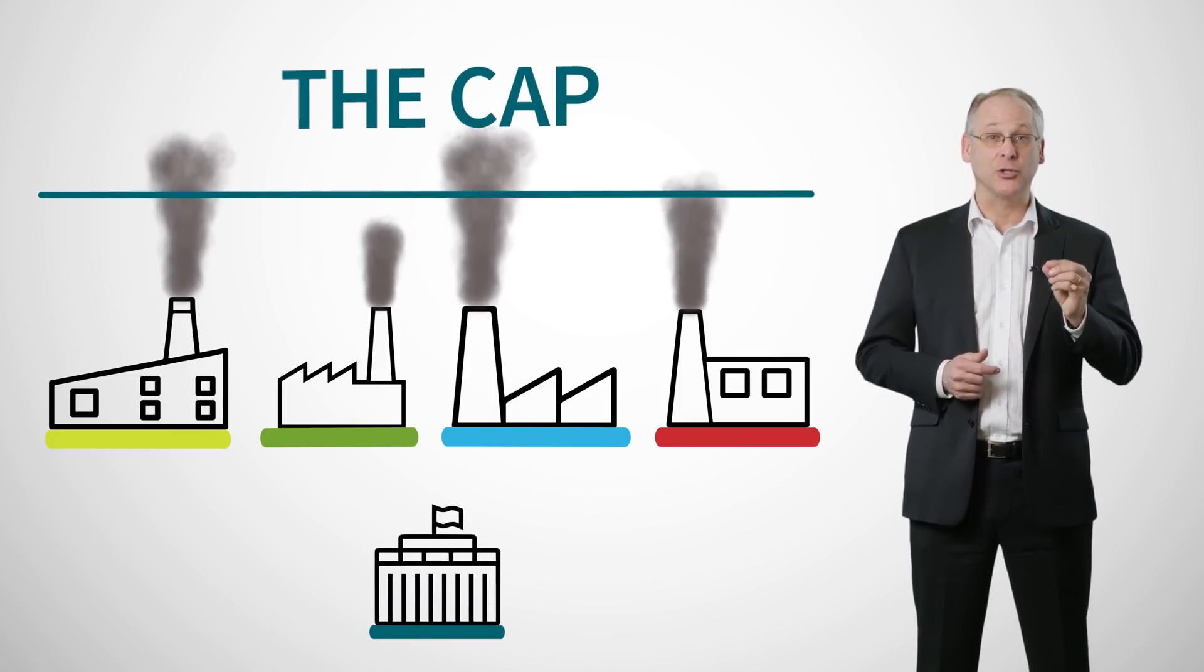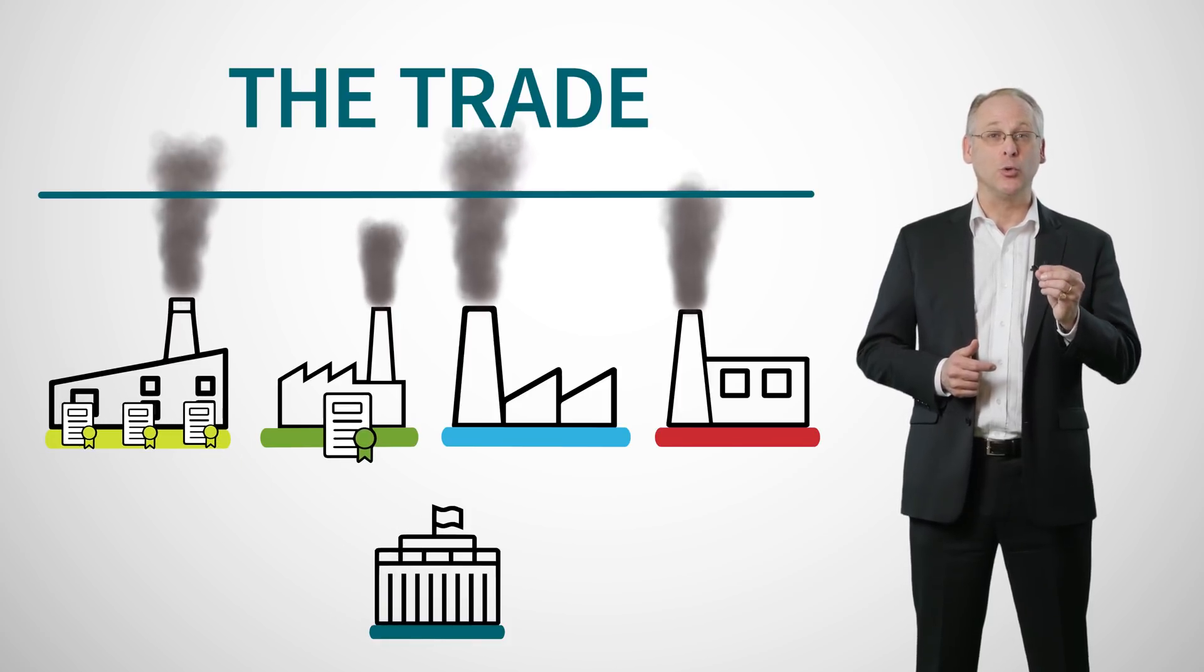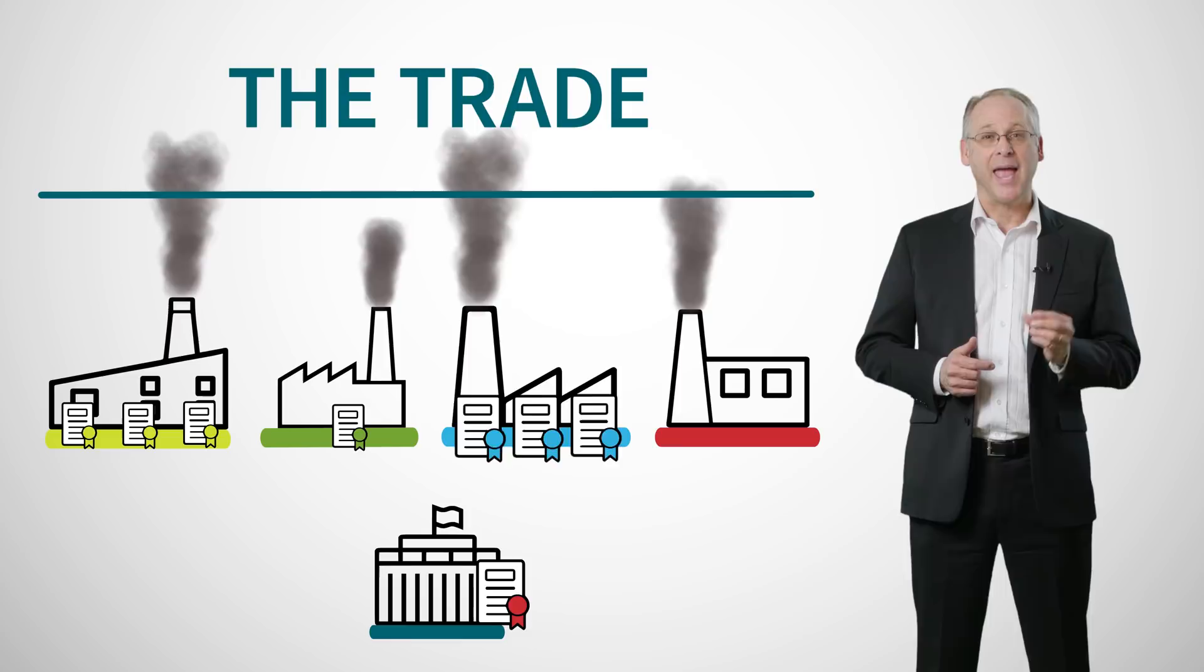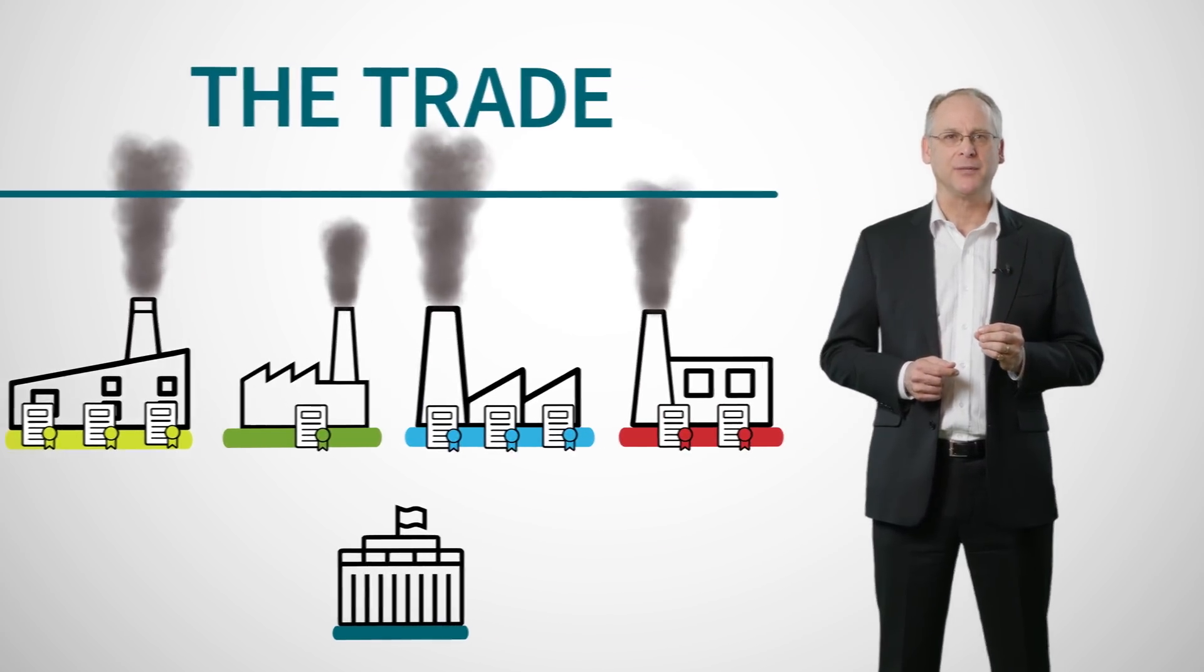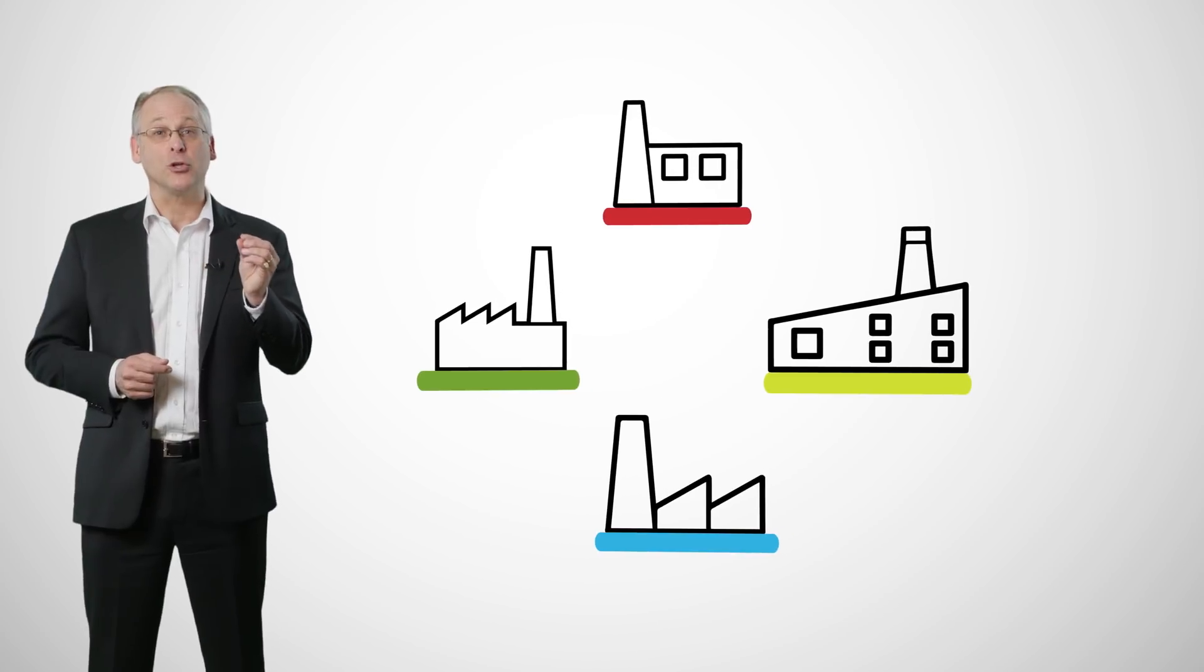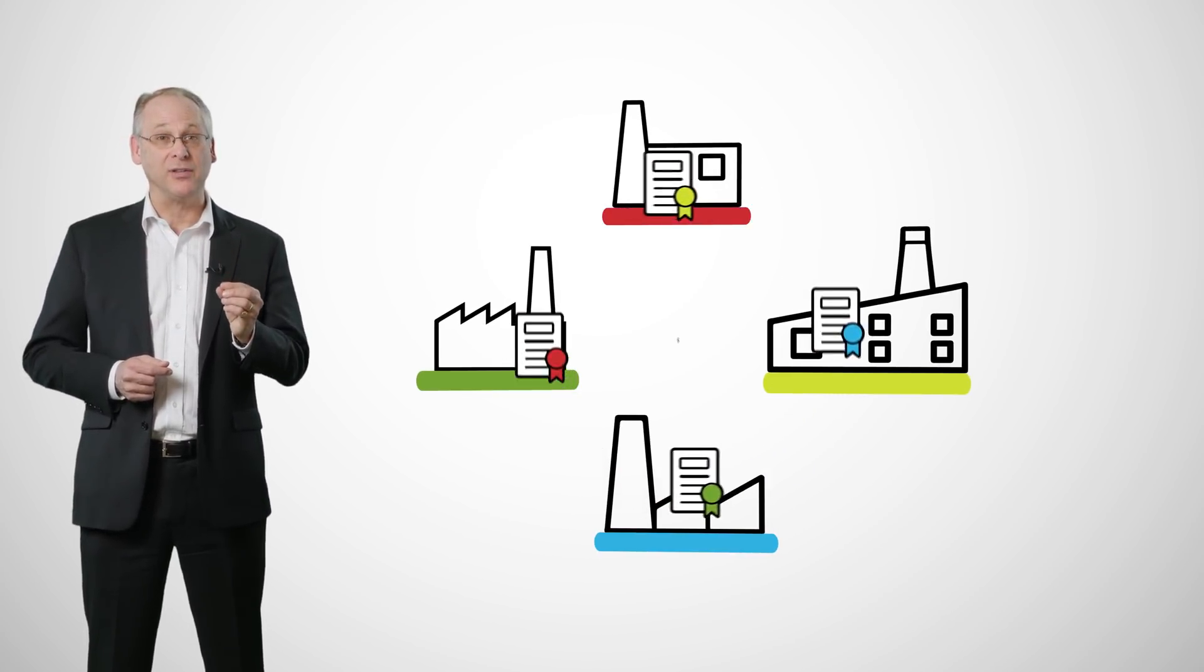The second part is the trade. The government sells or issues permits to emitters of greenhouse gases, and every emitter needs a permit for every ton of GHGs that they emit. The trade part is that they can trade among themselves, and in that market for permits, a price is established.